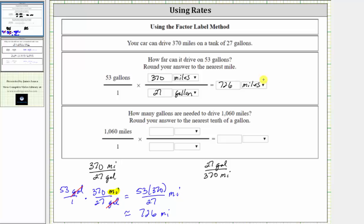And now to determine how many gallons are needed to drive 1,060 miles, we'll multiply by the rate of 27 gallons per 370 miles. When multiplying by this rate, the units of miles will simplify out, leaving us with gallons, which is what we want.